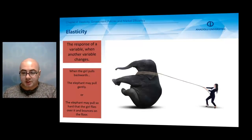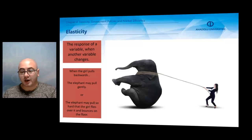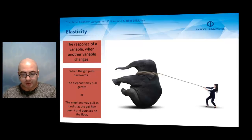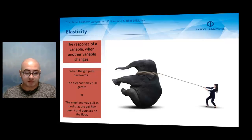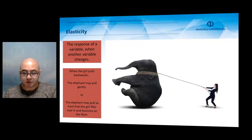Elasticity measures the responsiveness of the variable B when a change in the variable A happens. In the illustration, the girl pulls the elephant. The elephant's response to that may be a gentle pull that causes the girl to come forward, or it may be a hard response which throws the girl on the floor.